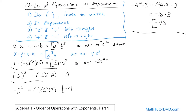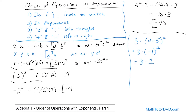The last problem: three times (4 minus 5) squared. First, look for parentheses — we have them, so do that first. Four minus five is negative one, so we now have three times (-1)². The exponent applies to everything inside the parentheses: negative one times negative one is positive one, because negative times negative is positive. Then three times one equals three. That's the final answer.